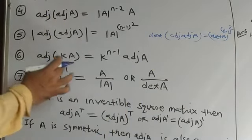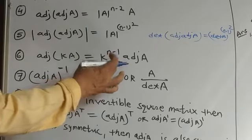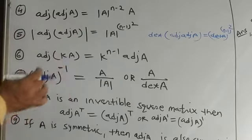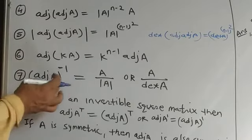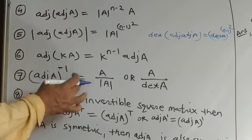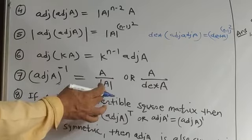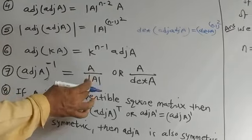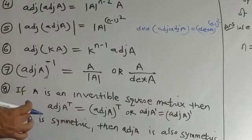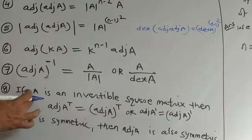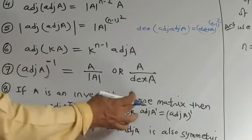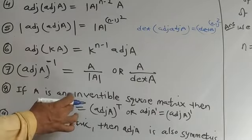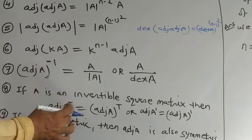Sixth property: Adjoint of kA equals k raised to the power n minus 1 into Adjoint A. Seventh property: Adjoint A inverse, meaning the inverse of Adjoint A, equals A upon determinant A.